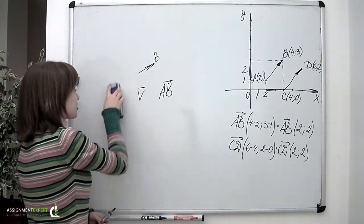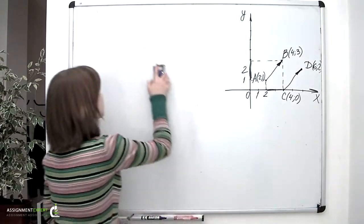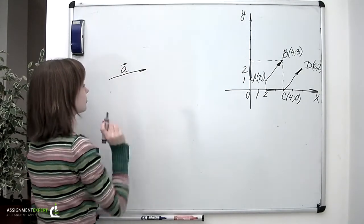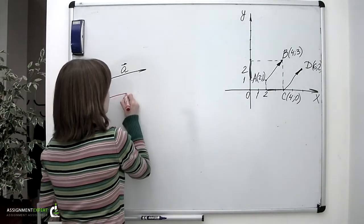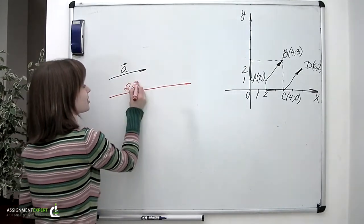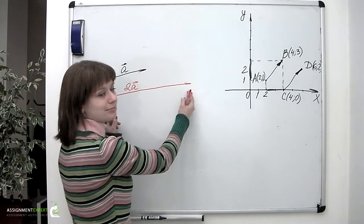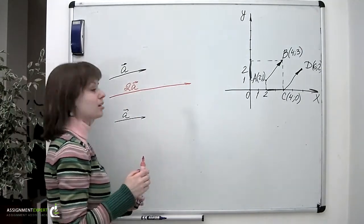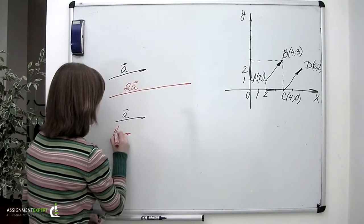Now let's talk about what we can do with vectors. First of all, we can multiply a vector by a number. Suppose we have vector A and we want it multiplied by 2 — we obtain vector 2A, which is directed exactly the same way as the initial vector A, but its length is two times greater. If we multiply vector A by one-half, we still obtain a vector directed the same way as A, only its magnitude would be twice as small — so this one is one-half A.